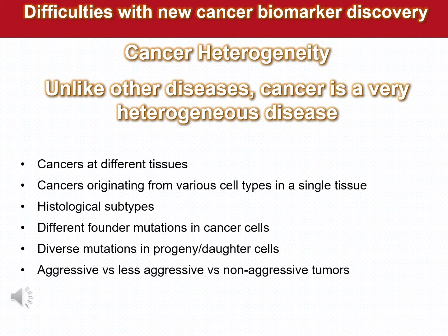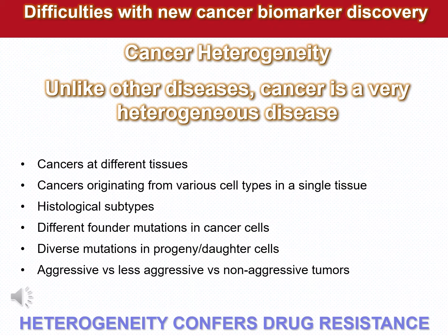Cancers can originate from various cell types within a single tissue — for example, breast cancer has two or three different subtypes. There are also specific histological types of cancers; ovarian cancer has four histological types. It has also been discovered recently that different founder mutations are present in various cancer cells, and there is diversity of mutations between the progeny and the daughter cells. Clinically, cancers behave very differently — some are very aggressive and some are much less aggressive.